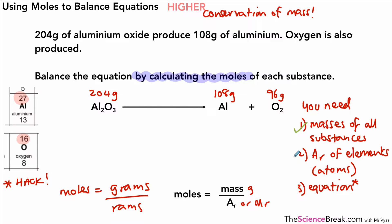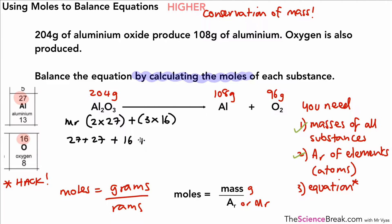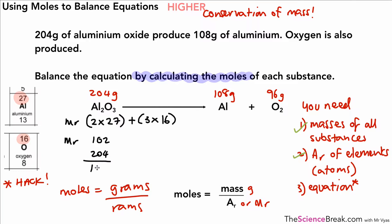Now we need the relative formula masses. Atomic masses from the periodic table will be given or available. The relative formula mass for aluminium oxide is 2 × 27 plus 3 × 16, giving 102. Then applying grams over rams: 204 divided by 102 gives 2 moles of aluminium oxide.